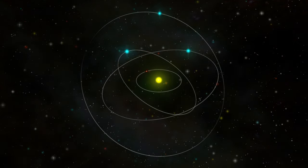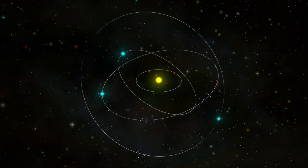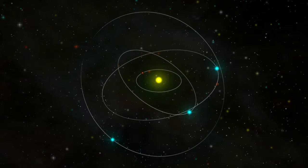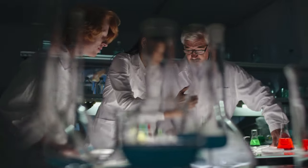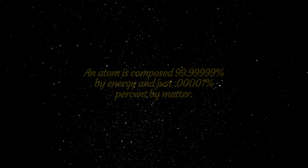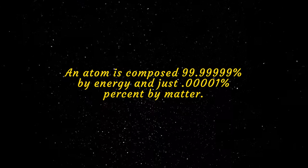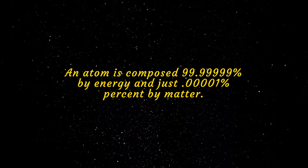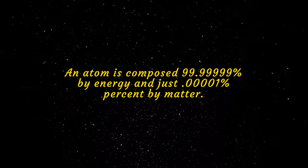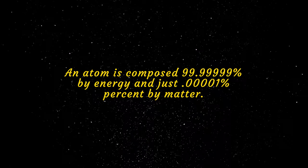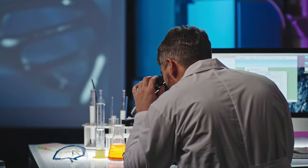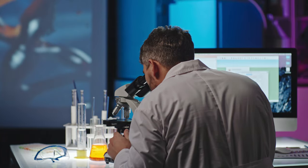The old school belief was that electrons orbited around the nucleus like planets around the sun. But the new school tells us that an atom is composed 99.99999% by energy and just 0.00001% by matter. If we look at this proportionally, it's almost nothing.